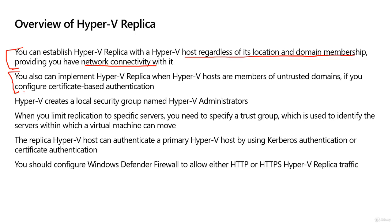If you are not in the same Active Directory forest, your hosts are considered members of untrusted domains — either a different forest or a workgroup. In that case, you do have to generate a certificate and use certificate-based authentication. That's not extremely common; typically both Hyper-V servers will be within the same Active Directory domain, if not the same domain then the same forest. But if not, you can use certificate-based authentication.